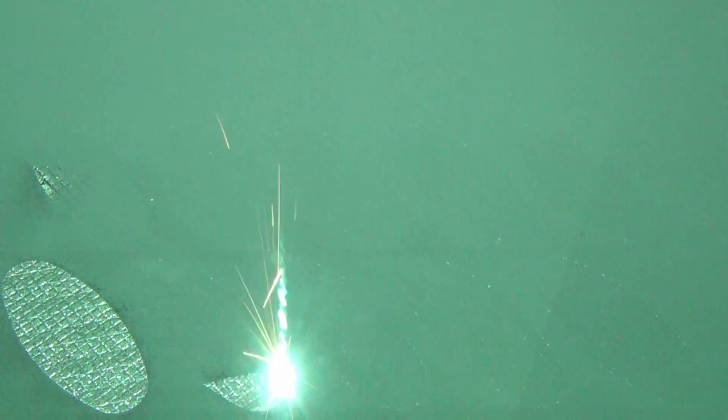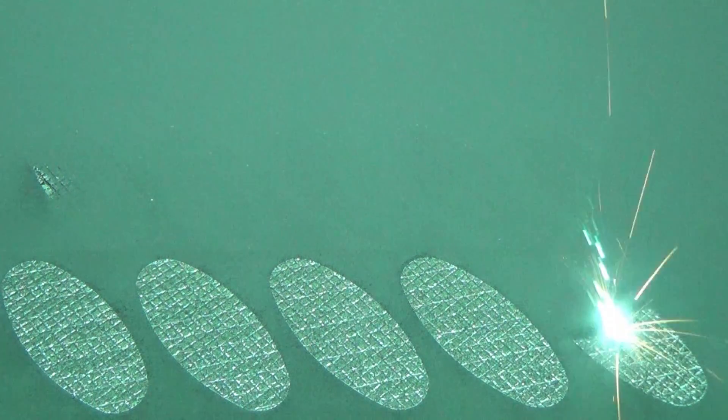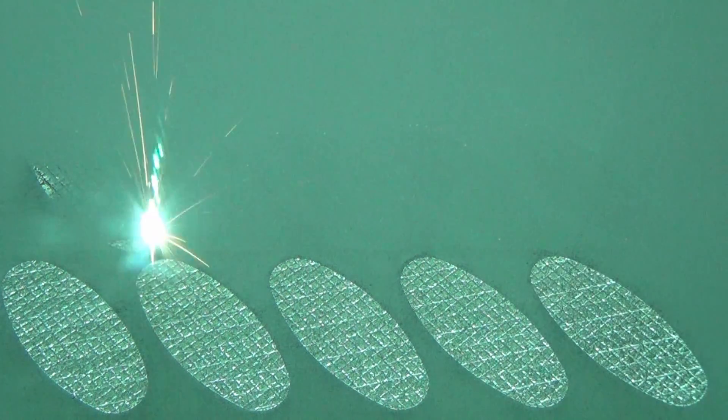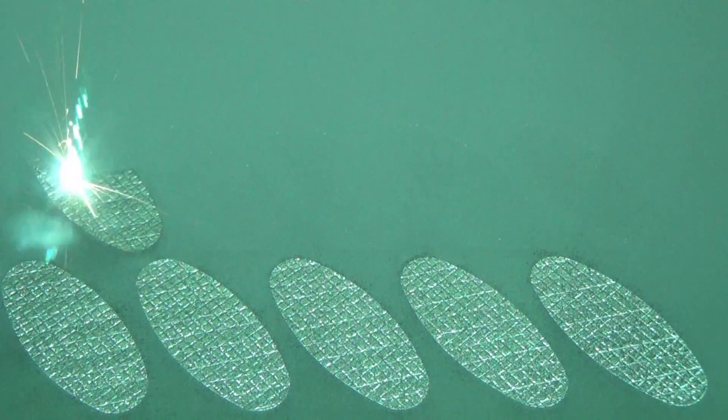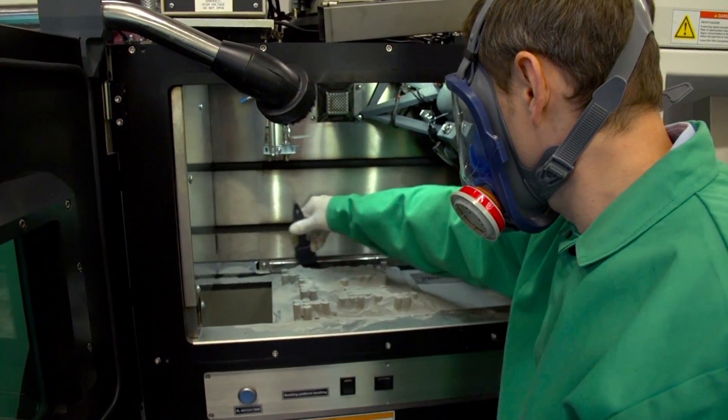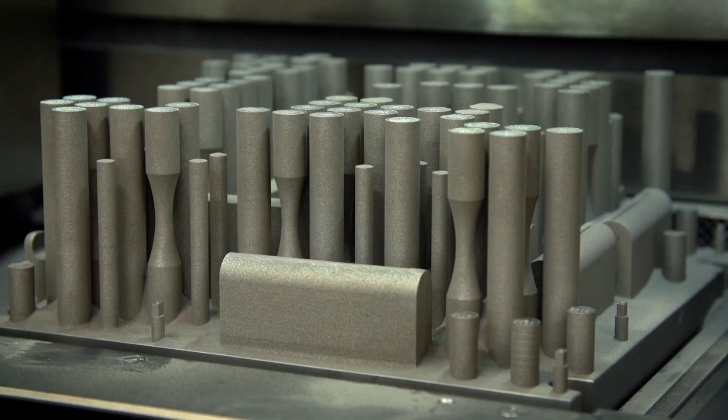Powder bed fusion is a different approach. They take a vat of powder and scrape a small layer on the order of 20 to 60 microns across your building plane. Then the laser solidifies that layer. The layers are so fine that complicated builds can take days, but the precision is appealing.